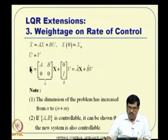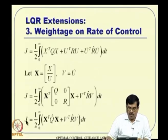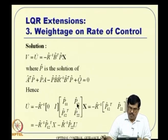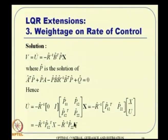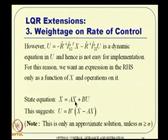We now have a system dynamics in LQR form: capital X-dot = A-hat capital X + B-hat V with a quadratic cost. Applying LQR theory, the control V = U-dot = -R-hat inverse B-hat transpose P-hat times capital X, where P-hat solves the corresponding Riccati equation. Splitting capital X into [X; U] and the P-hat matrix into blocks, U-dot can be expressed as minus K_1 times X minus K_2 times U — a differential equation in U.